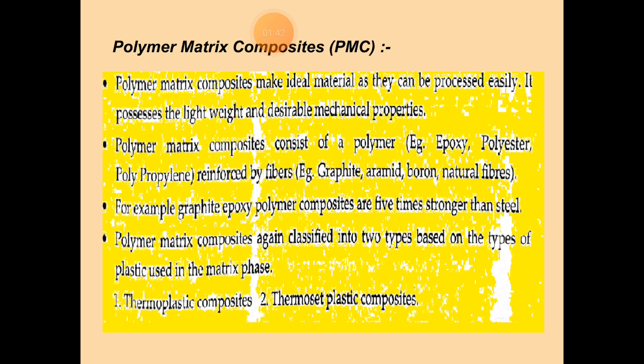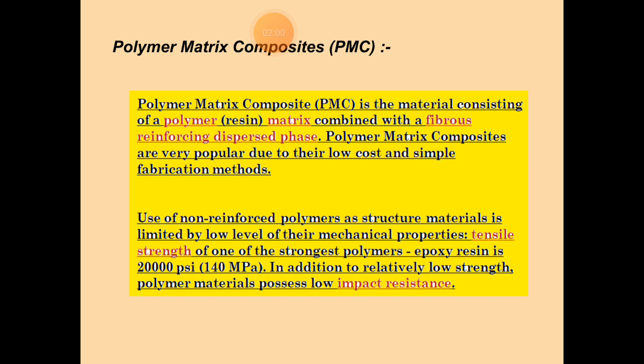The composite is stronger than steel. Polymer matrix composites are again classified into two types: thermoplastics and thermoset plastics composites. Polymer matrix composites are a material consisting of a polymer resin matrix combined with a fibrous reinforcing dispersed phase. They are very popular due to their low cost and simple fabrication method. Use of non-reinforced polymers as structural materials is limited by their mechanical properties — the tensile strength of stronger polymers like epoxy resin is 20,000 psi, meaning 140 MPa. In addition, polymer matrix possesses low impact resistance.